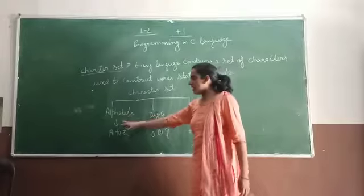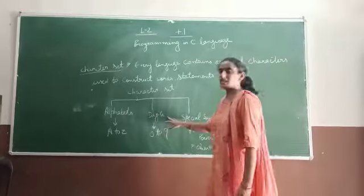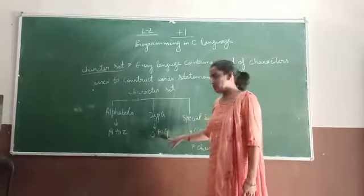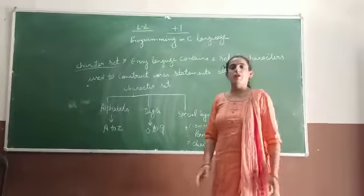Alphabet: A, Z, A, B, Z, whatever. Next, Digit. Digit means 0 to 9: 0, 1, 2, 3, 4, 5, 6, 7, 8, 9. What do we need to do? Digits.